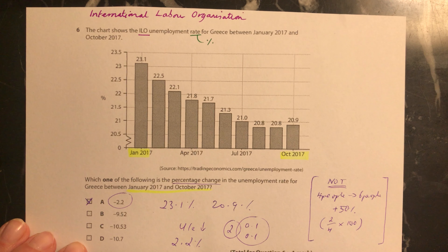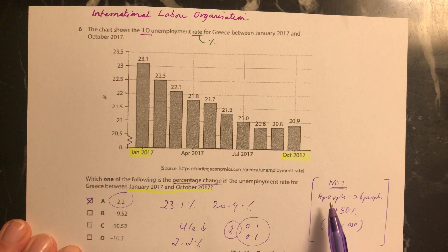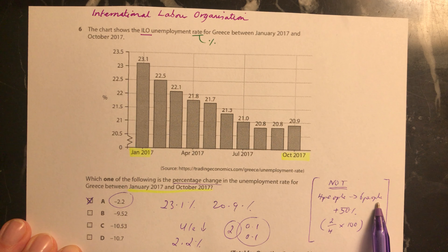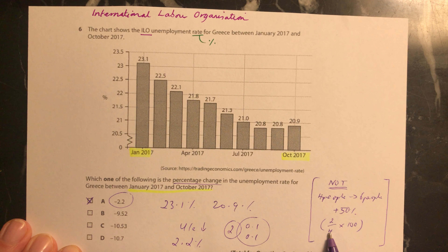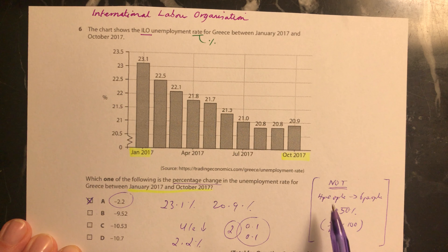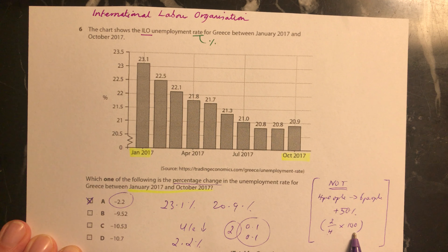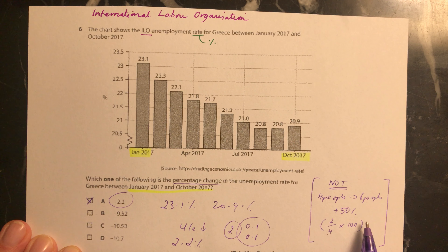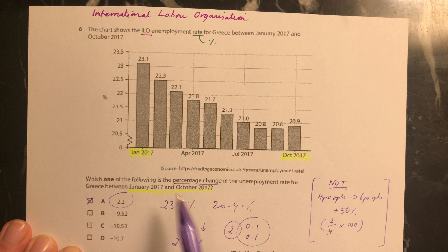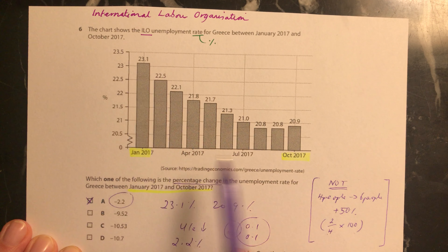Just to clarify what this question is not: it's not like working out a percentage change where, say, four people are unemployed and now six are unemployed — where you'd calculate the change over the original times 100, giving (2/4) × 100 = 50%. That's how you work out a percentage change. But this question has already given you the percentages, so all you need to do is find the simple difference between 23.1 and 20.9. The answer is A.